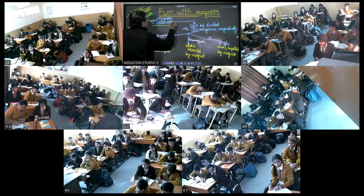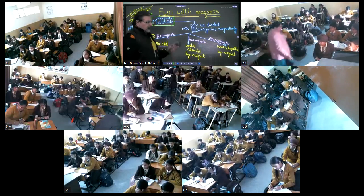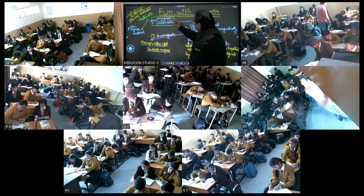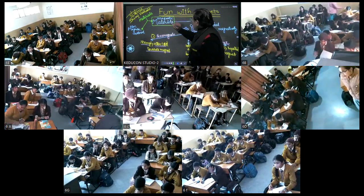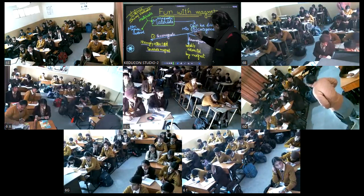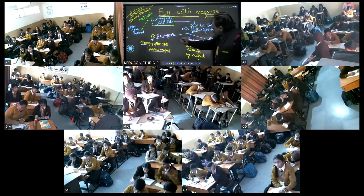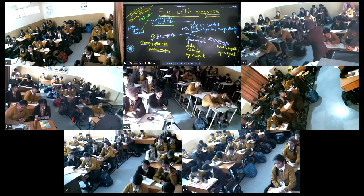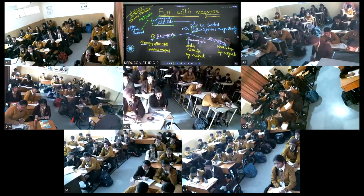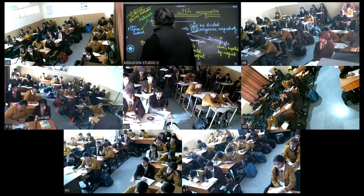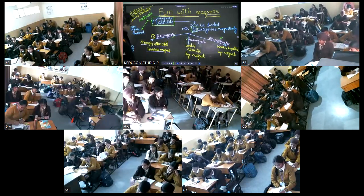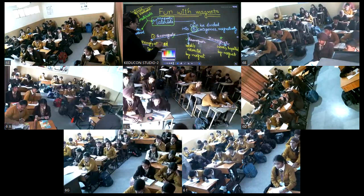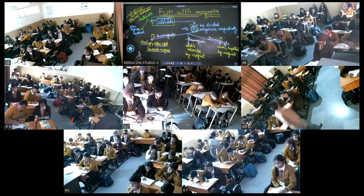जिनके ऊपर चुम्बक की close presence का असर जरूर होगा, उनको तीन categories में बांटा जा सकता है। दो categories वाले attract होते हैं चुम्बक की तरफ, और एक category चुम्बक से परे भागती है। दुनिया में तीन ही ऐसे materials हैं जो चुम्बक की तरफ strongly attracted होते हैं।